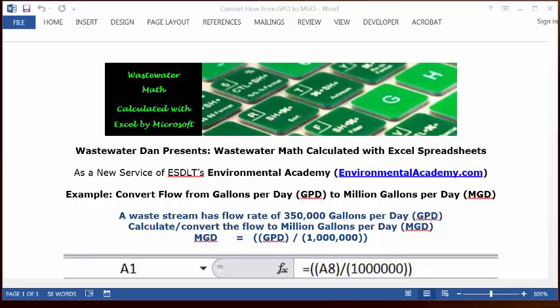So the formula to convert GPD to MGD is to simply take MGD equals the gallons per day divided by one million.